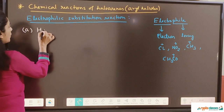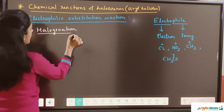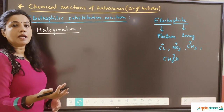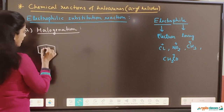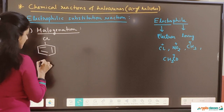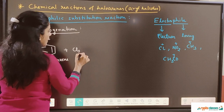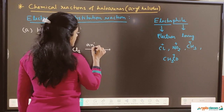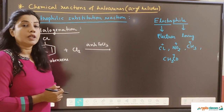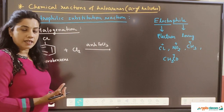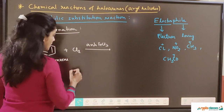First we are going to start with halogenation. Halogenation means the electrophilic substitution takes place with the help of a halogen. We are taking an aryl halide — chlorobenzene. When this reacts with chlorine in the presence of anhydrous FeCl₃, this is very important. Anhydrous FeCl₃ here acts as a Lewis acid. Lewis acids are electron deficient.